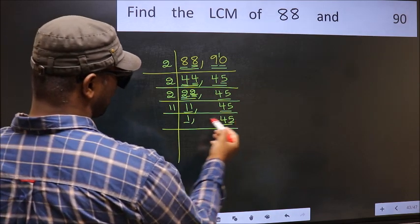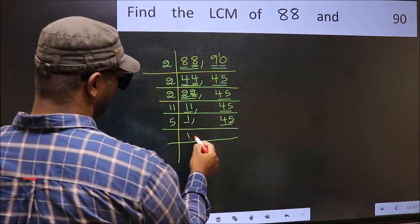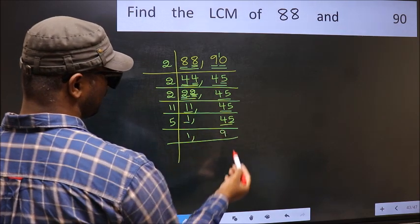Last digit 5, so take 5. When do we get 45 in 5 table? 5 times 9 is 45.